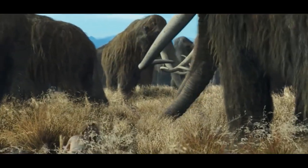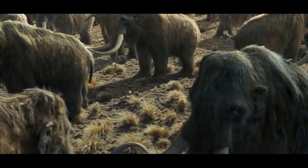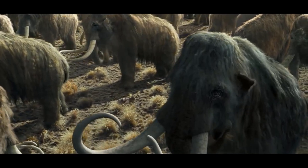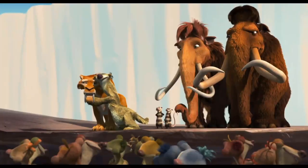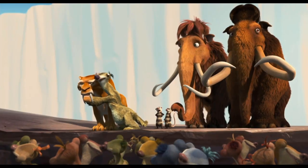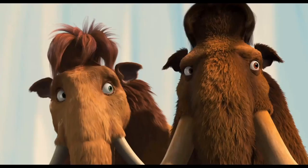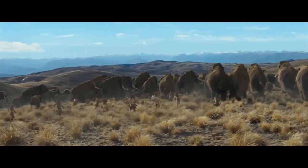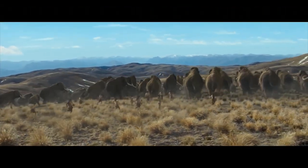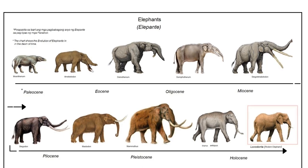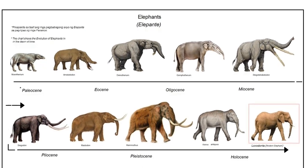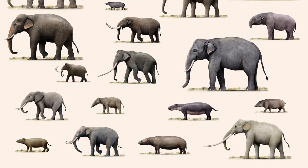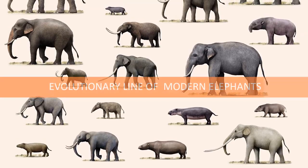In this video we will showcase the evolutionary line that brought about the three species of modern day elephants. We will dive into the past and start from the first proboscidean, that is the name of the group of animals that the elephants belong to. Let's go step by step from the first of these animals to the modern day African and Asian elephants.